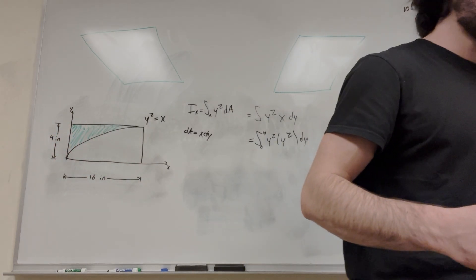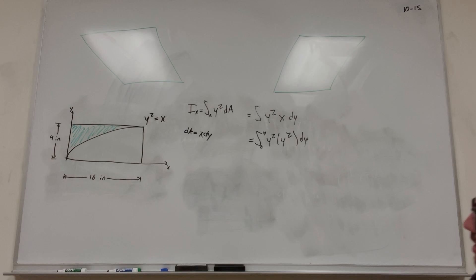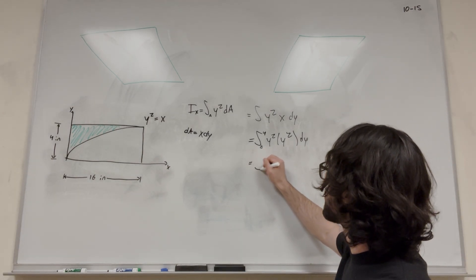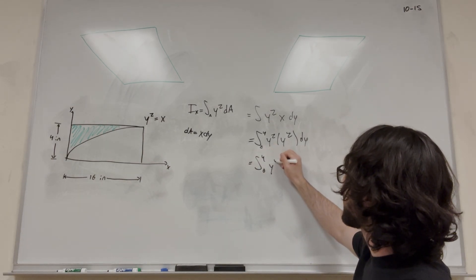So then it's just about integrating this. It's a pretty simple integral here. This is 0 to 4, y to the 4th dy.